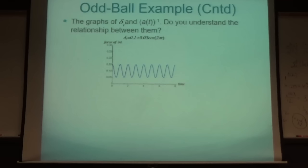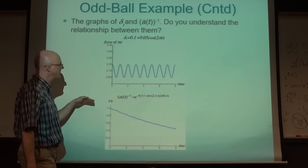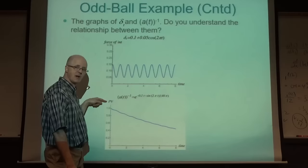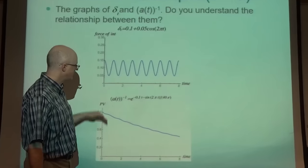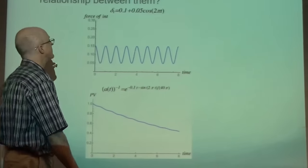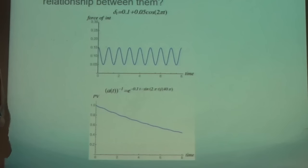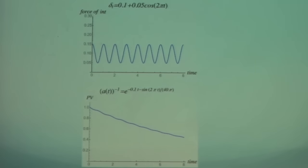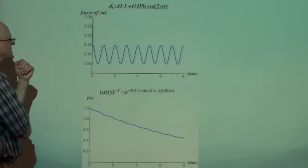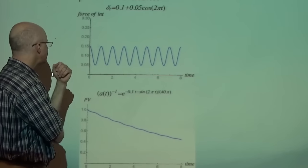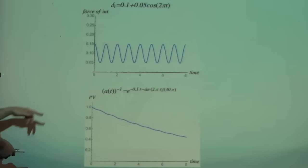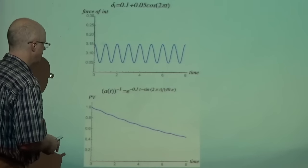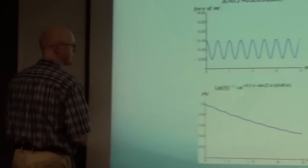Graphing the oddball example again: the force of interest is still oscillating. Now instead of the accumulated value, I'm graphing the present value as a function of time - it still has wobbles, but it's exponential decay rather than exponential growth.